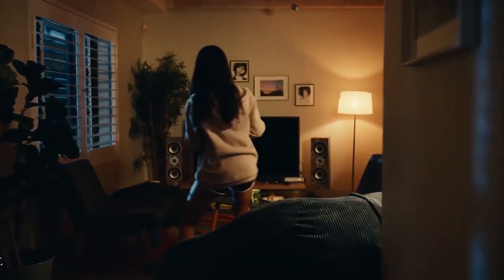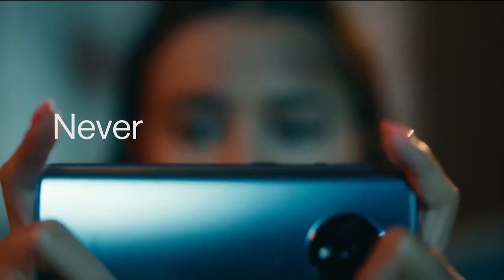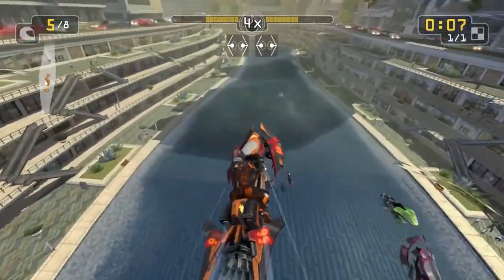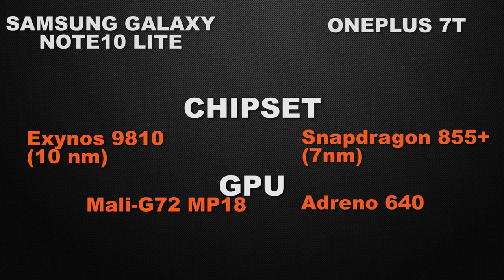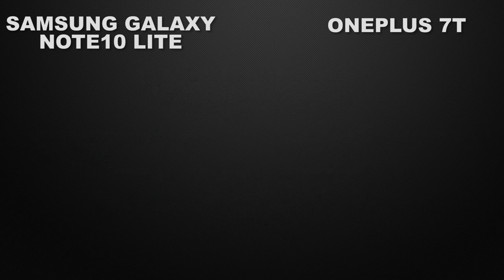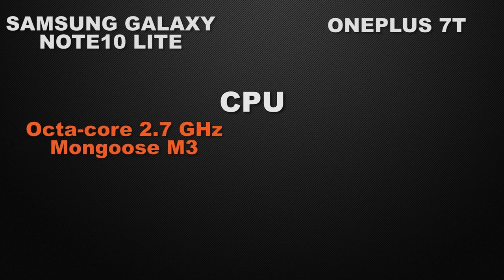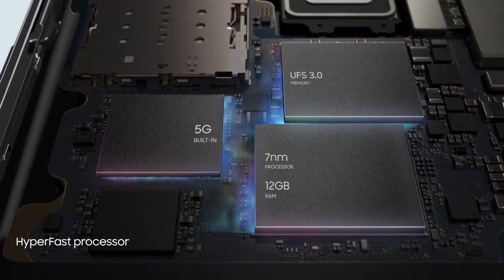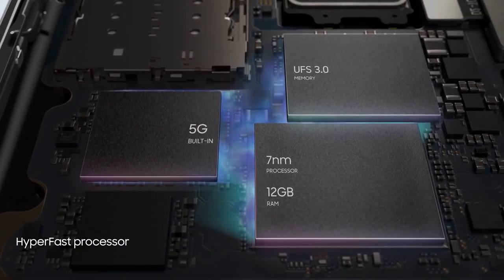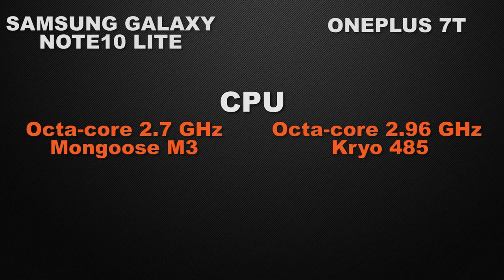For better graphics, Note 10 Lite comes with Mali G72 MP18 GPU and OnePlus 7T comes with Adreno 640. Again, due to power efficiency, OnePlus 7T is the winner. Talking about clock speed, Note 10 Lite comes with Octa Core 2.7GHz processor and OnePlus 7T comes with Octa Core 2.96GHz processor, so again the winner is OnePlus 7T due to its higher clock speed.